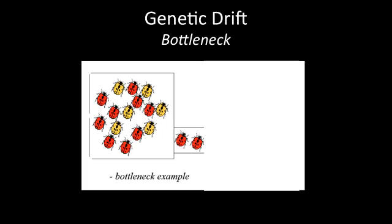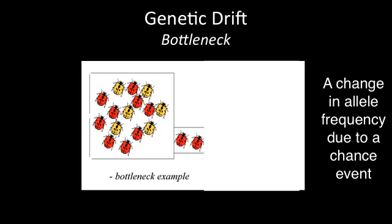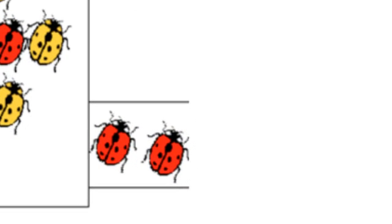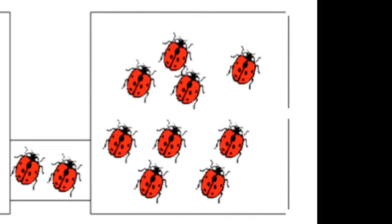Other mechanisms can change allele frequencies, such as genetic drift. Genetic drift is when a chance event can change allele frequencies, especially in small populations. Something known as the bottleneck effect can occur when a sudden change in the environment drastically reduces the size of a population by chance alone. The new population is left to rebuild with the gene pool it has available, having passed through a bottleneck that reduced its size.